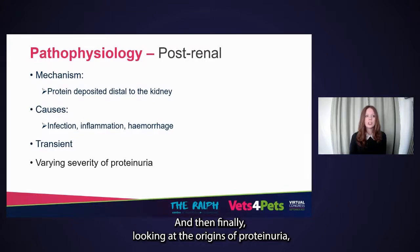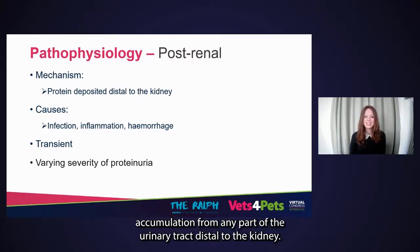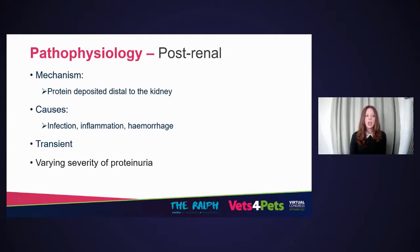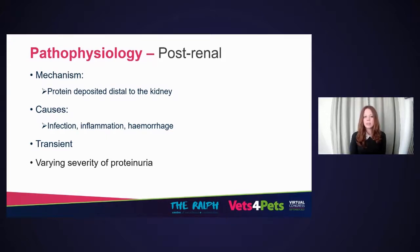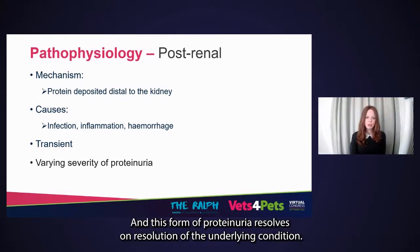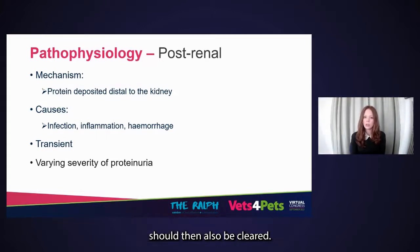Finally, looking at post-renal proteinuria: this is where urine protein accumulates from any part of the urinary tract distal to the kidney — so the lower urinary tract or the reproductive tract. The proteins are derived from hemorrhagic or exudative processes such as urinary tract infection, inflammation, vaginitis, or prostatitis. This form of proteinuria resolves on resolution of the underlying condition — for example, if you treat a urinary tract infection and it clears, the proteinuria should also resolve. The severity of proteinuria is highly variable.